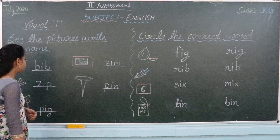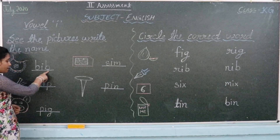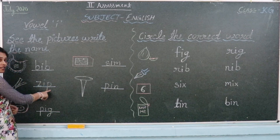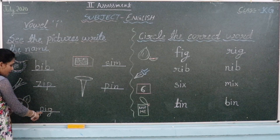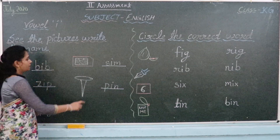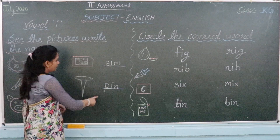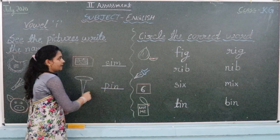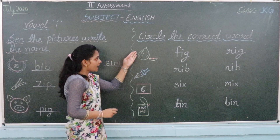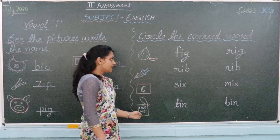Let's repeat. B, I, B — Bib. Z, I, P — Zip. P, I, G — Pig. S, I, N — Sin. P, I, N — Pin. It is called the circle that we have highlighted. Here are these pictures.